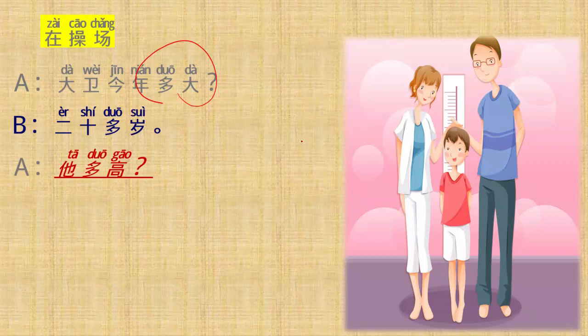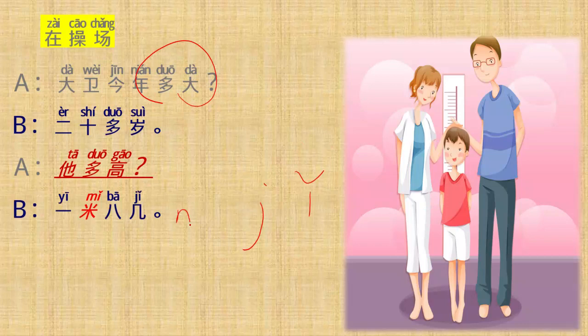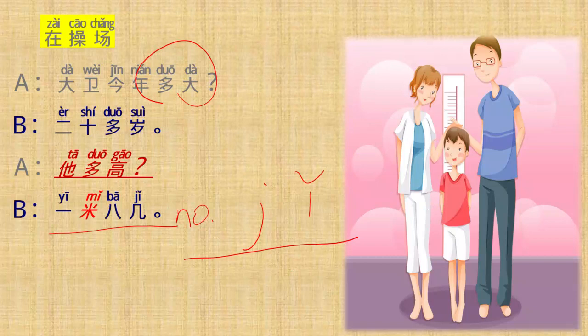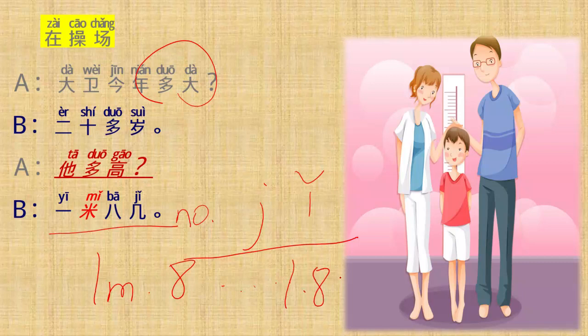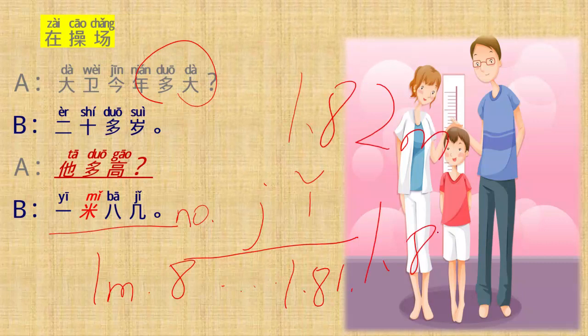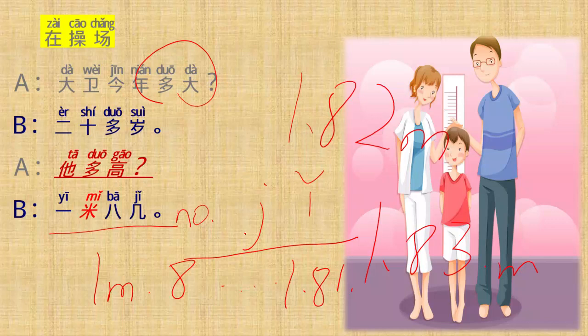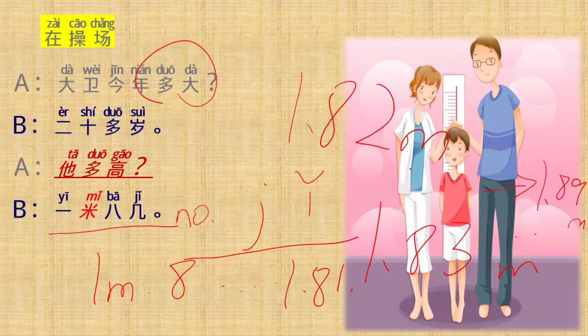二十多岁. 他多高? So how tall is he? 一米八几. Remember 几, number plus 几 that means more than. 一米八几, one meter and 八几. Maybe 一点八一 一米八一, 一米八二, 一米八三, it's all called 一米八几 to 一米八九. 好 大胃 今年 多大? 二十多岁. 他多高? 一米八几.